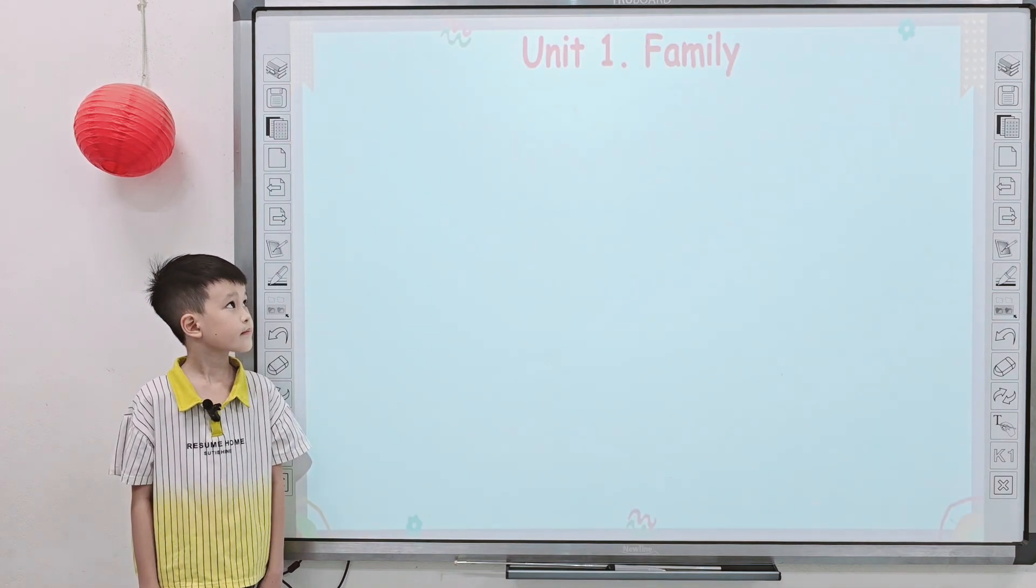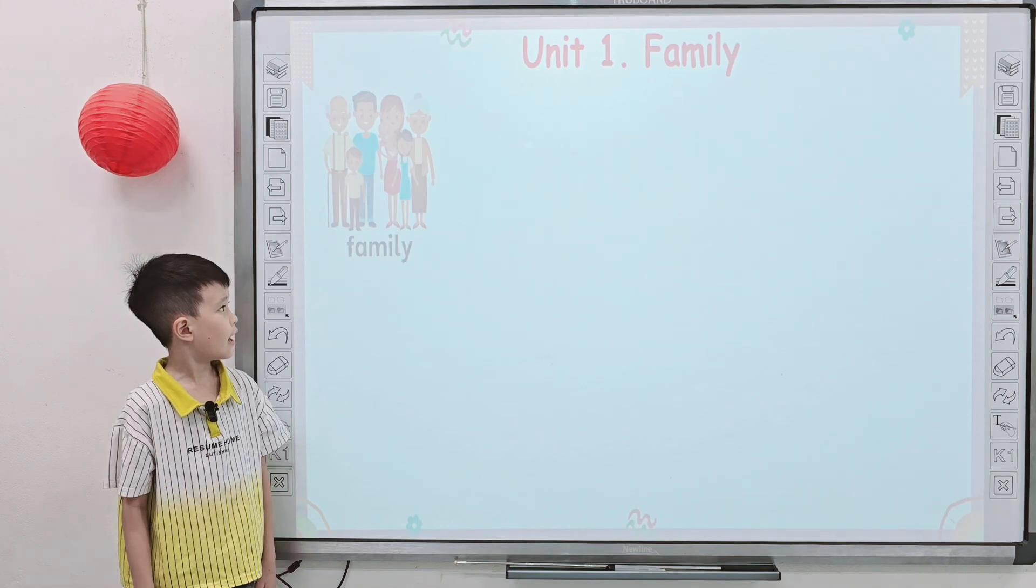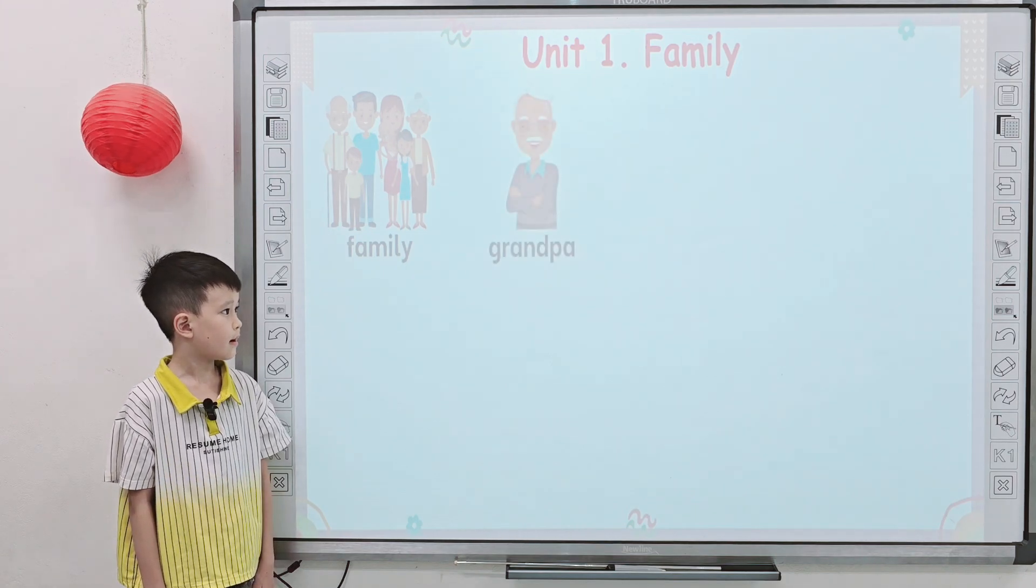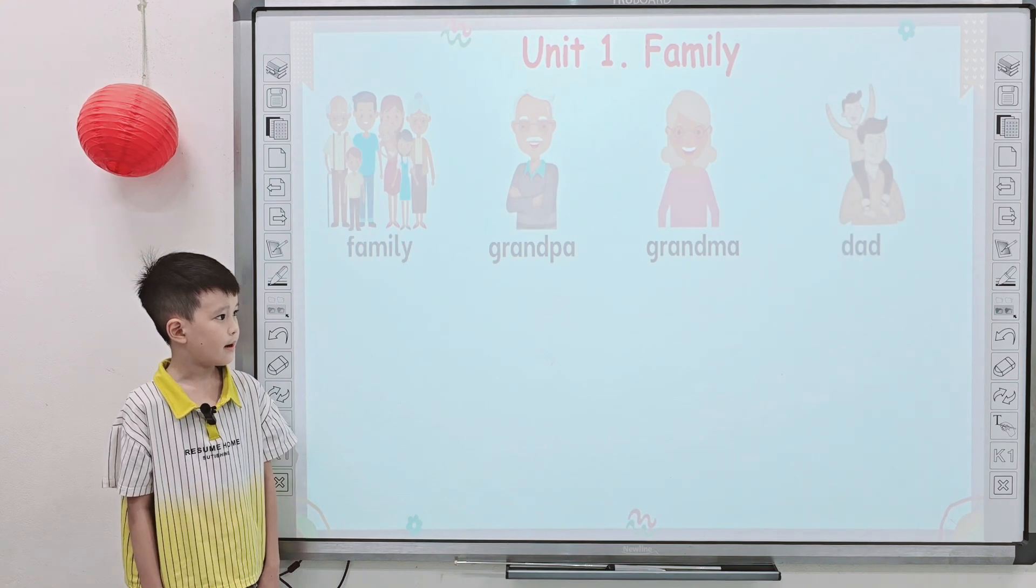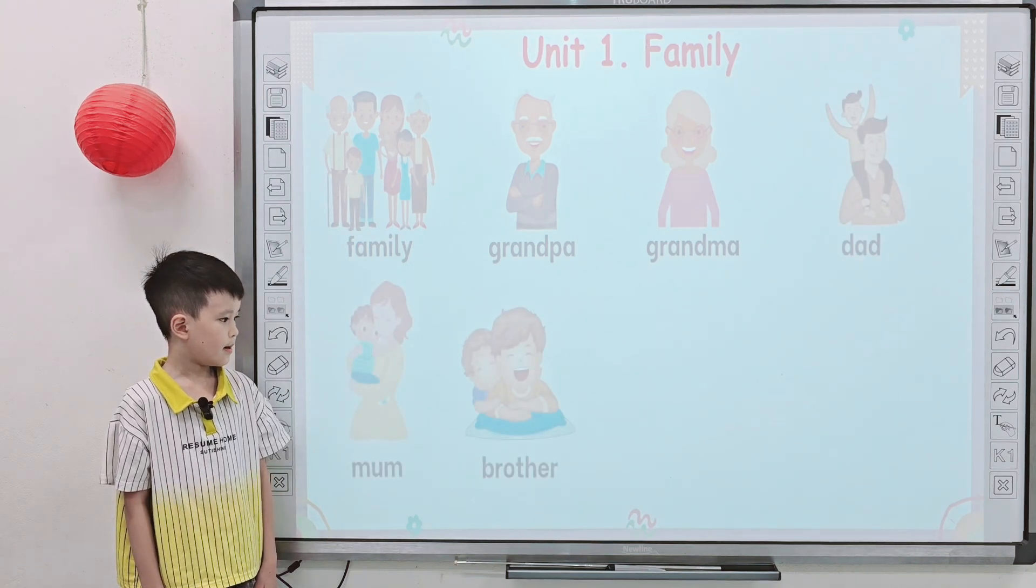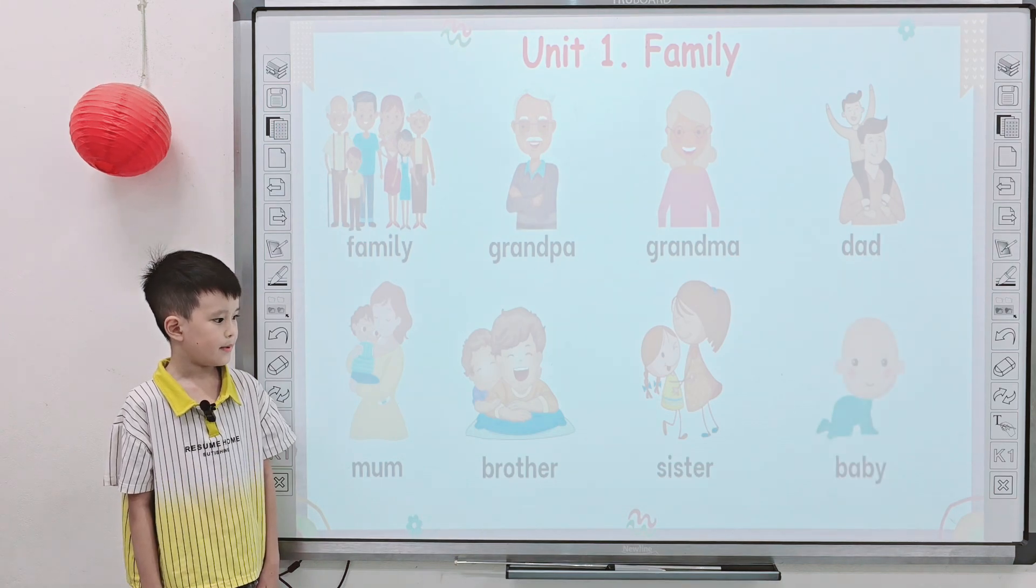So look at screen, you need one family. You can say the whole sentence. Let's go. This is my family. This is my grandpa. This is my grandma. This is my dad. This is my mom. This is my brother. This is my sister. This is my baby.